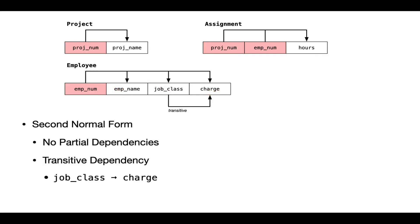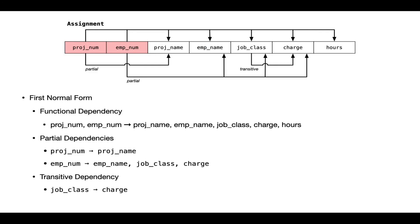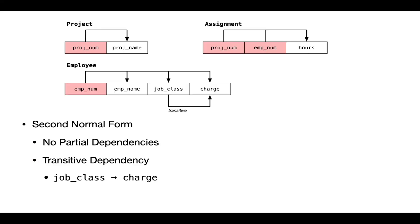I haven't eliminated the transitive dependency between job class and charge yet. In this second normal form version of the data model, I'm still carrying that along — I'm not eliminating transitive relationships yet. I'm only dealing with partial dependencies in which the determinant is a subset of a candidate key. At this point I'm in second normal form — no remaining partial dependencies — but I still have one transitive dependency to address in order to get to third normal form.